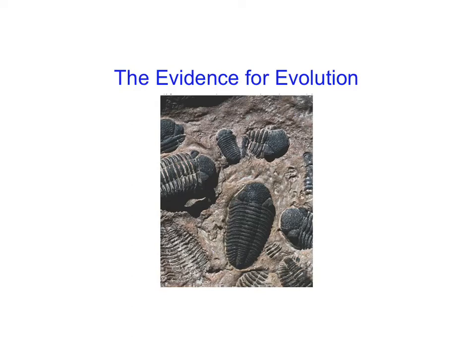One, of course, being fossils. You can see here some numerous fossils of an organism called a trilobite, very abundant and common in the fossil record, but of course no longer on the planet today. So we're going to be looking at things like fossils here.